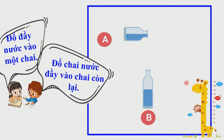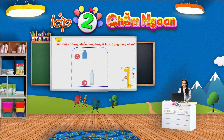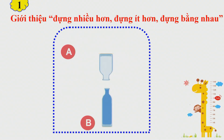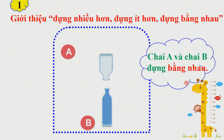Nào, cùng trình bày nhé. Trường hợp thứ nhất, cô sẽ dùng mô hình để minh họa. Nếu cô đổ nước từ chai A sang chai B, và cô thấy đã hết nước của chai A và chai B đầy nước, như vậy cô sẽ có câu kết luận chai A và chai B đựng bằng nhau. Cô nghĩ chắc nhiều bạn sẽ đoán được, đúng không?